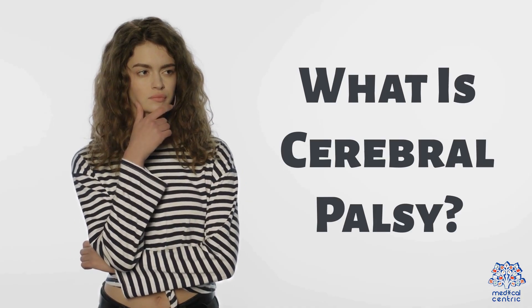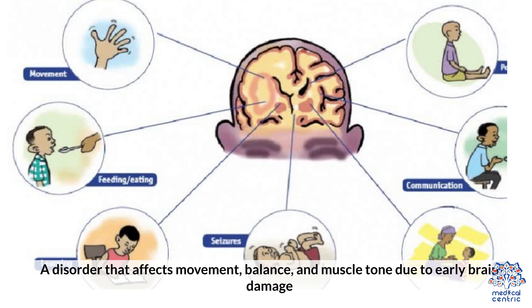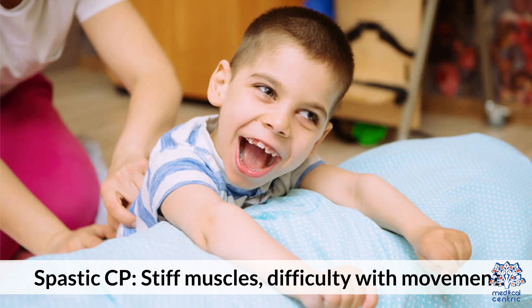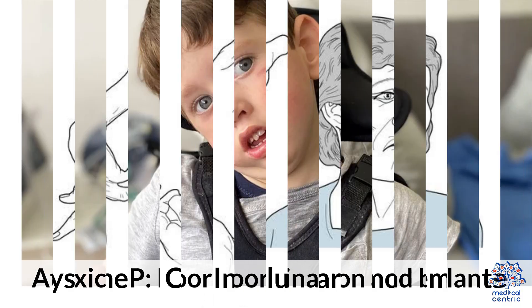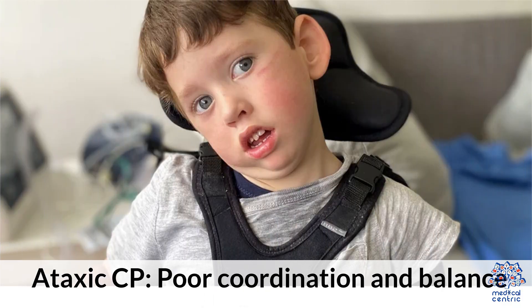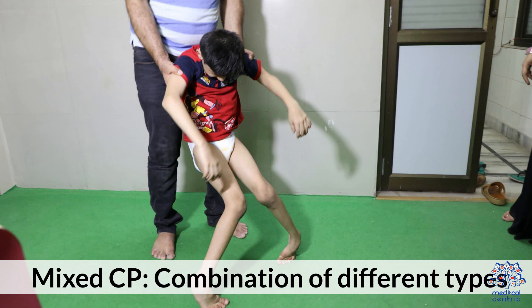What is Cerebral Palsy? It is defined as a disorder that affects movement, balance, and muscle tone due to early brain damage. Types include: Spastic CP — stiff muscles and difficulty with movement; Dyskinetic CP — involuntary movements; Ataxic CP — poor coordination and balance; and Mixed CP — a combination of different types.